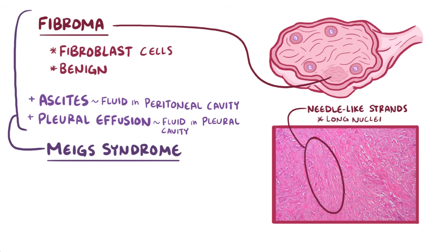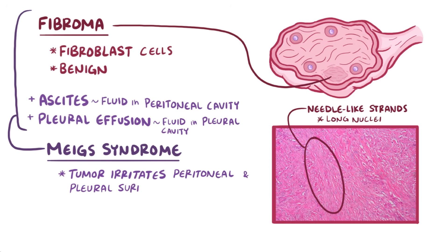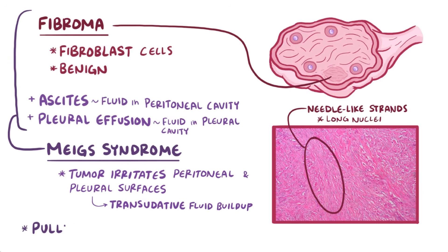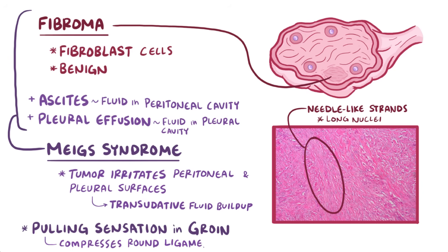The exact pathogenesis here is unclear, but it's thought that this solid ovarian tumor irritates the peritoneal and pleural surfaces, which leads to a transudative fluid buildup in both spaces. Fibromas can occasionally grow to the size of an orange and can cause a pulling sensation in the groin when it compresses the round ligament of the uterus.